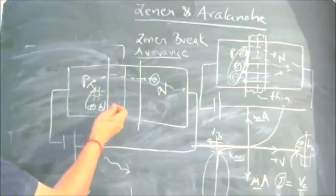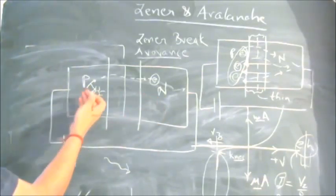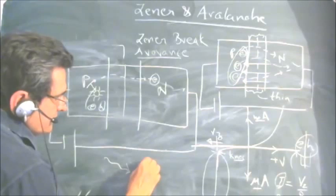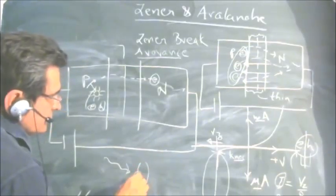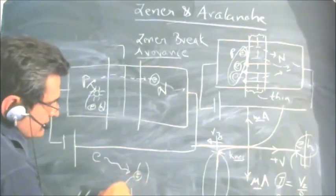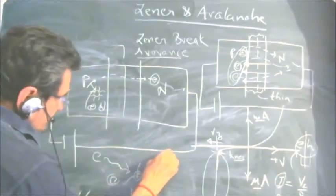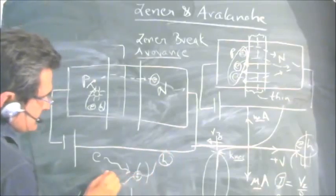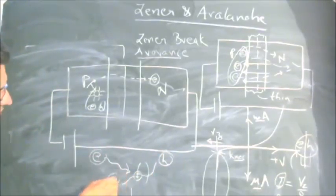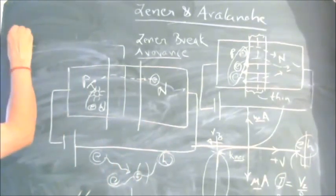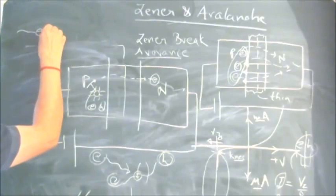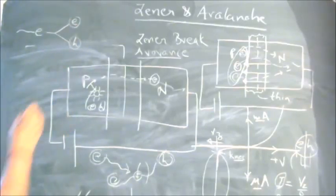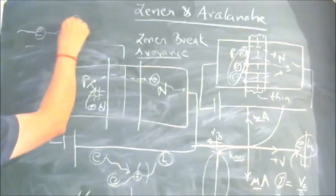One electron moving with high velocity and high energy — due to the applied reverse bias voltage which caused it to cross over — acquires enough energy to rupture a covalent bond. It collides and creates E-H pairs. So from one original electron, we now have one more electron and one hole, giving us three charge carriers.